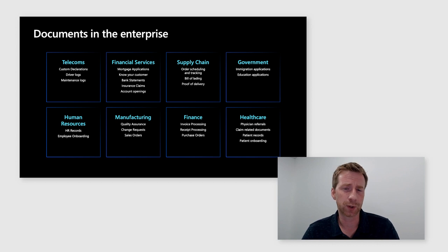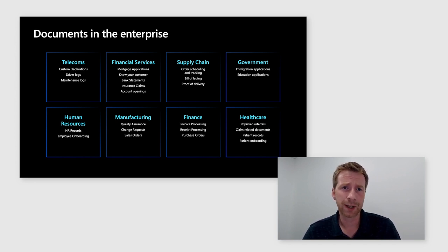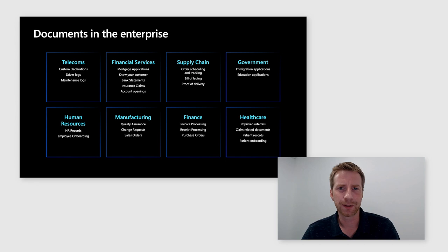Some common examples include invoice processing and purchase orders in the finance department, quality assurance or change requests in manufacturing, proof of delivery in supply chain, or application forms in the government space. Many departments rely on workers to manually process information from these forms. Imagine if all the time could be saved if these documents could automatically process themselves without the need for human intervention. With IDP technology, this is all possible.